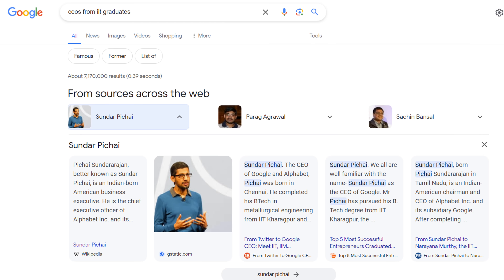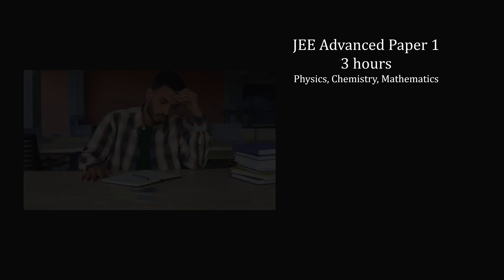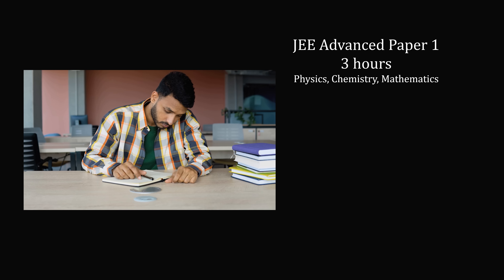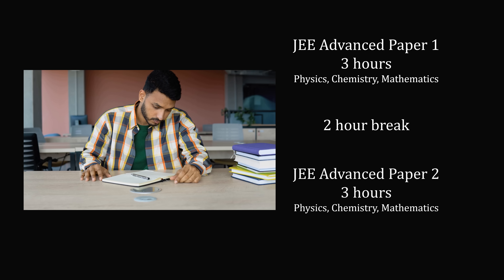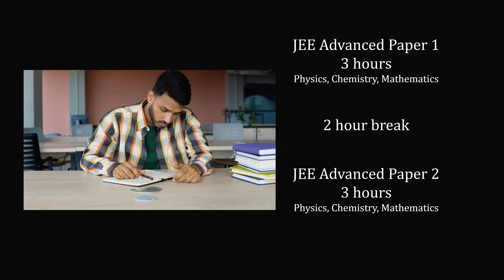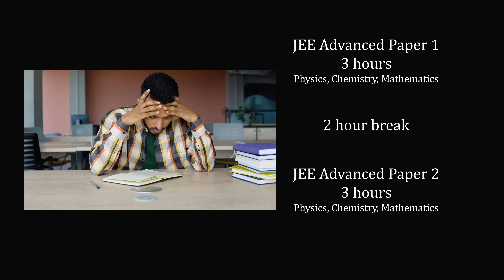So what makes the JEE Advanced test so difficult? The format is a three-hour test where you have a paper that tests physics, chemistry, and mathematics. This is like taking a Putnam exam, which is three hours. But you then have a two-hour break, and you have to take another paper for three hours. It's a grueling and challenging exam, and you only have an average of three minutes to solve each question.